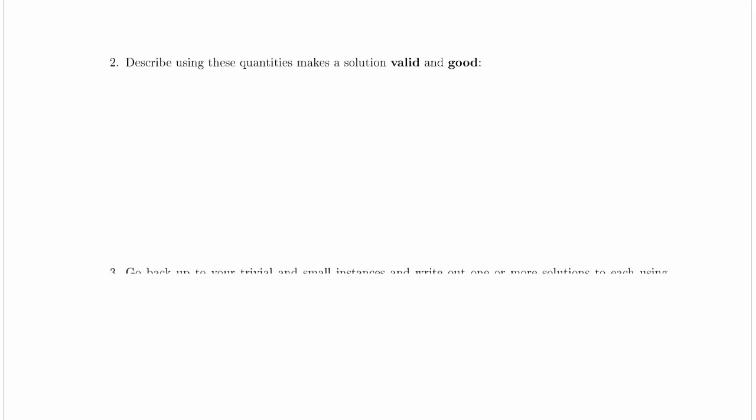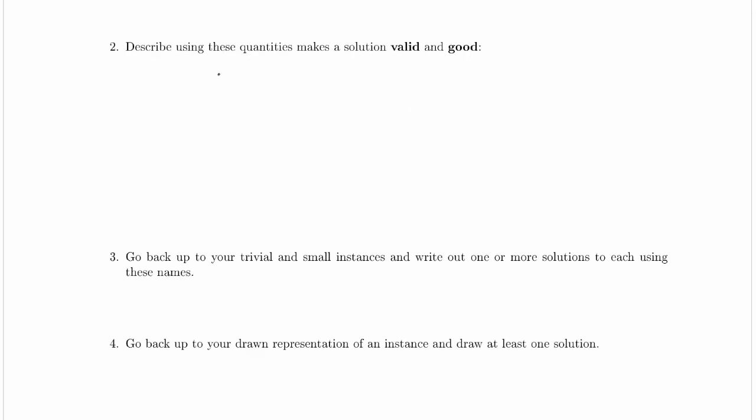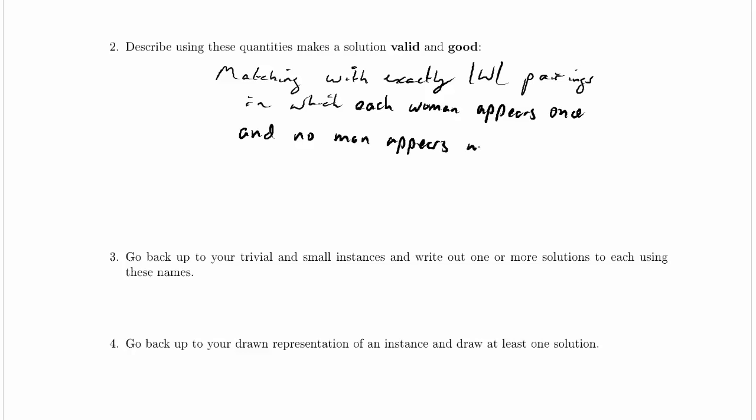In this case things are a little bit different because a valid solution is going to be a matching, and since we've already learned that word, I'm just going to go ahead and use it. It's a matching with exactly the size of W pairings, in which each woman appears once and no man appears more than once. So this is effectively what means a solution is valid.